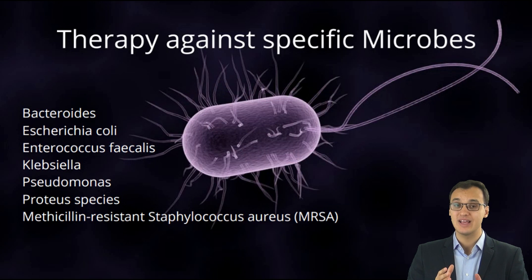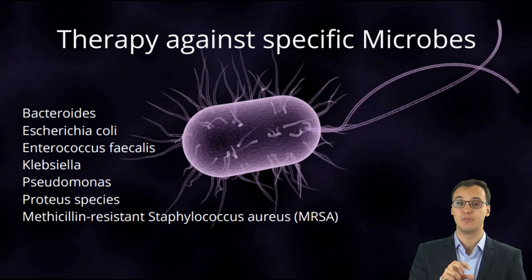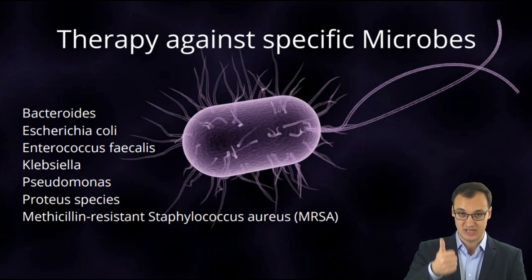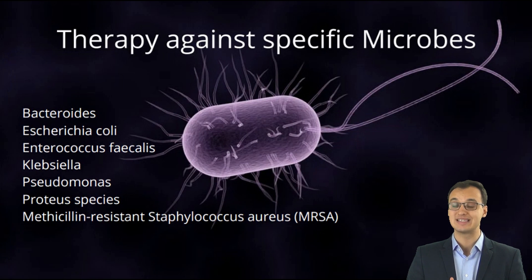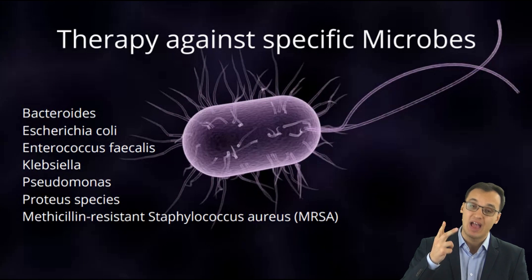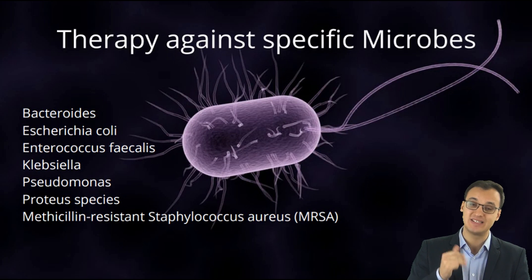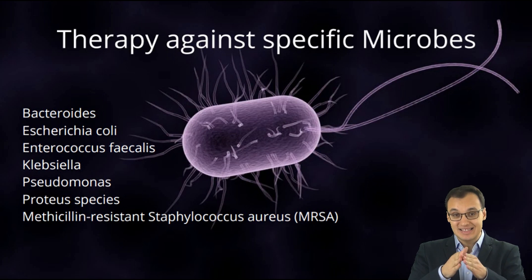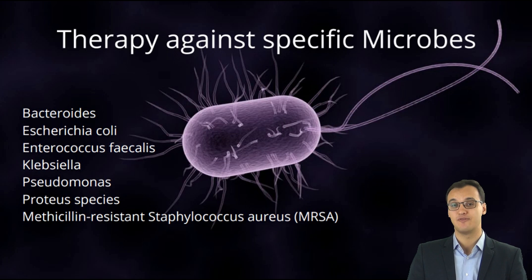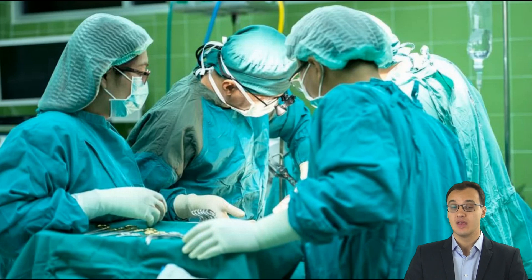When we get the blood culture results, we start to treat the specific microbes infecting the gallbladder, such as Bacteroides, Escherichia coli, Enterococcus faecalis, Klebsiella, methicillin-resistant Staphylococcus aureus, Pseudomonas, or Proteus species.